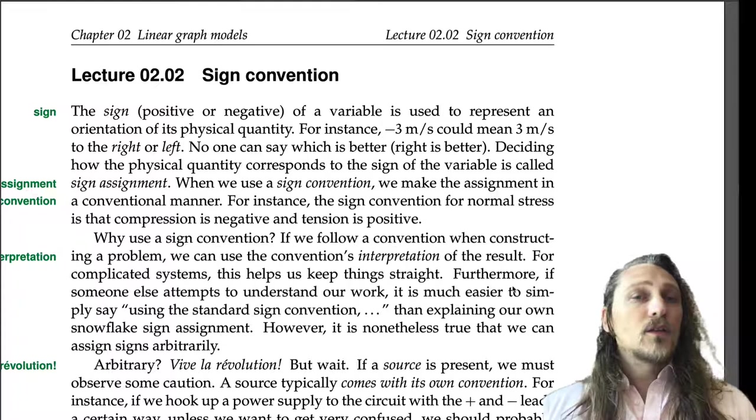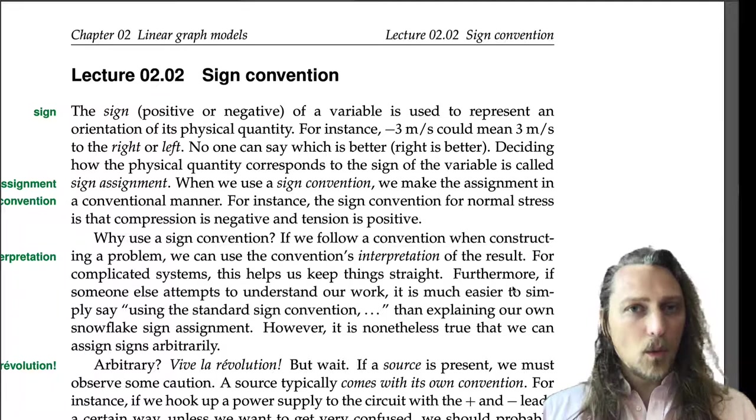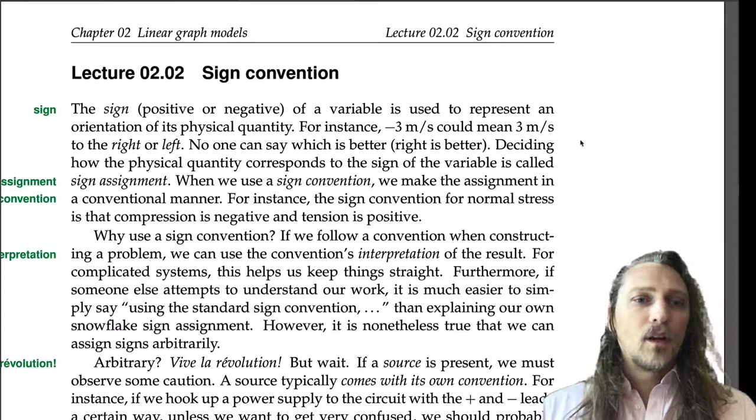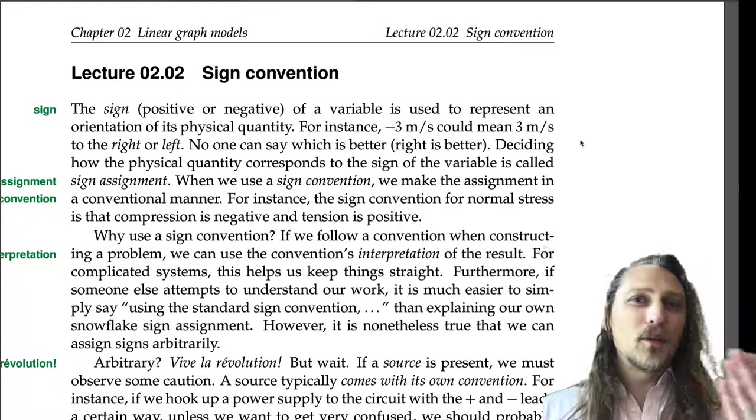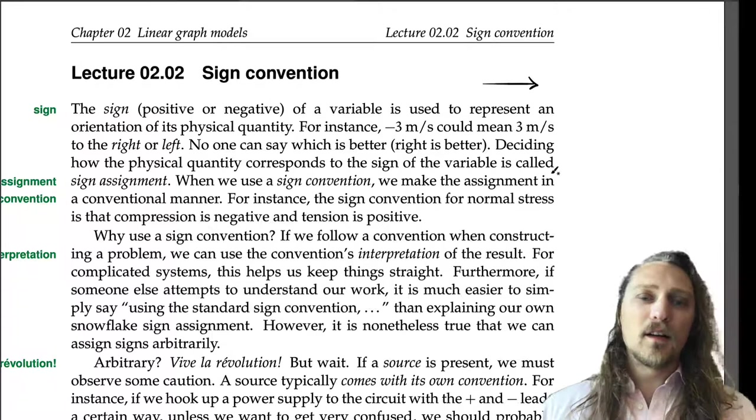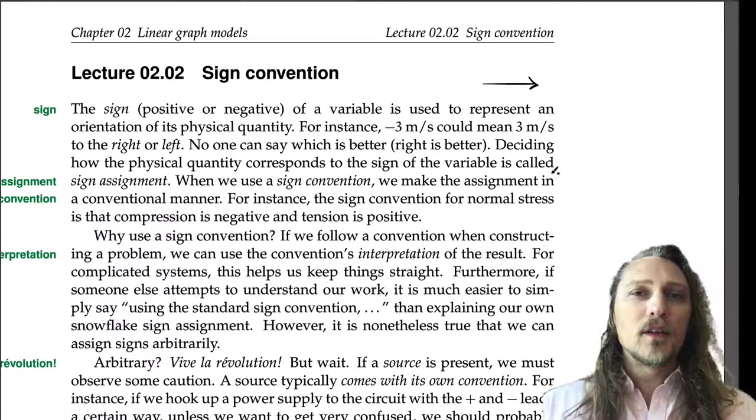The sign, positive or negative, of a variable is used to represent an orientation of its physical quantity. For instance, negative 3 meters per second could mean 3 meters per second to the left or to the right. No one can say which is better. We've assigned the direction rightward to be positive, but we could also assign left to be positive. Deciding how the physical quantity corresponds to the sign of the variable is called sign assignment.